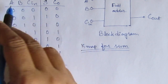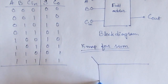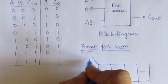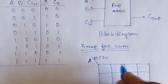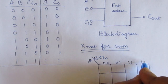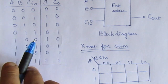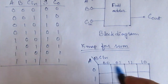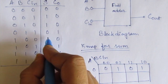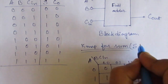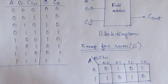So these are the sum inputs. We have three inputs, so we need to draw the K-map with inputs A, B, and C-in. The input combinations are 0, 0, 1, 1, 1, 0 — considering these according to the output: 0, 1, 0. So this is the K-map for sum. Therefore, we can take each one and find the expression for it.